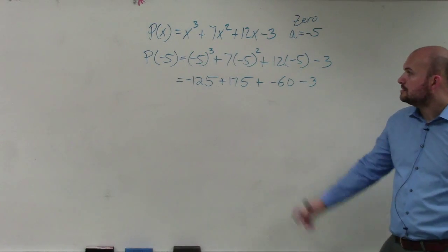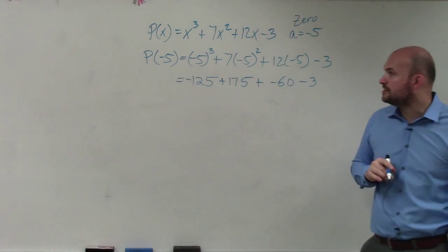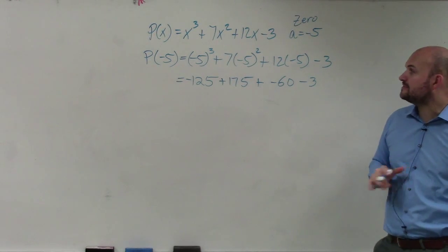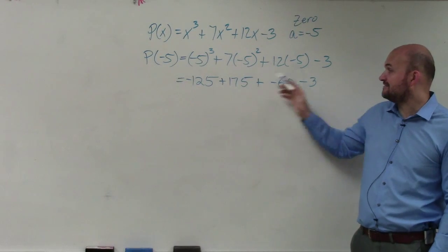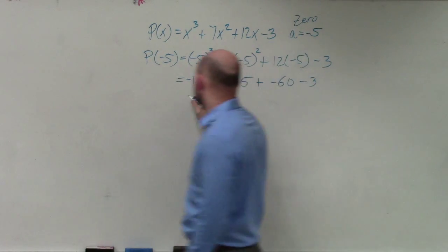So if I combine these two, that would give me negative 185. Negative 185 plus 175 would give me negative 10, negative 10 minus 3 would give me negative 13.